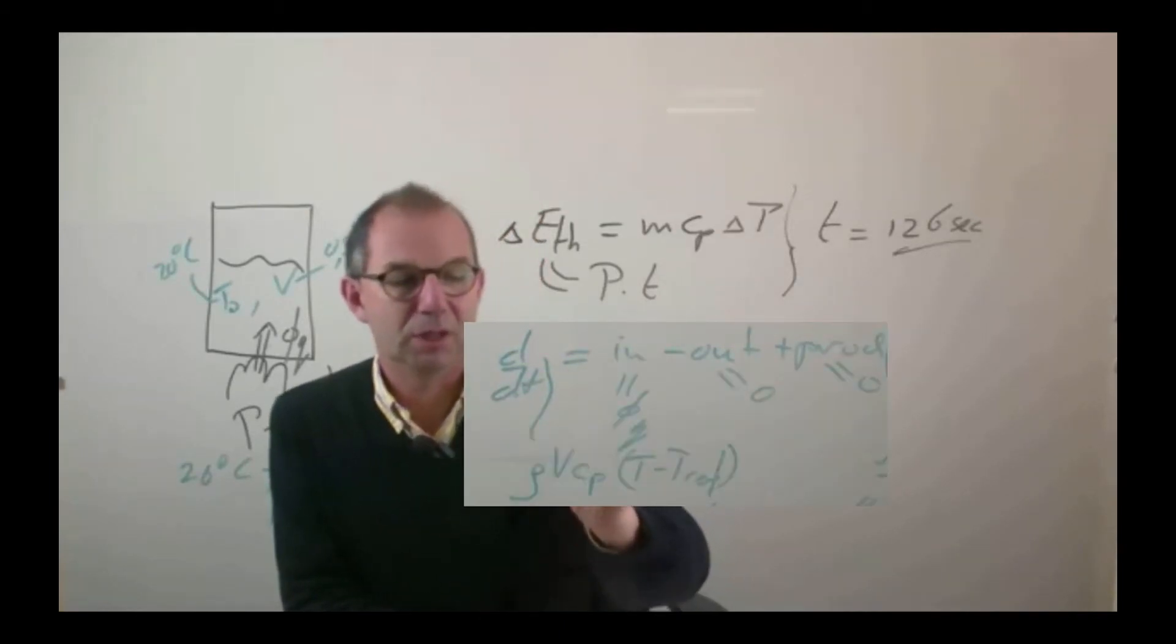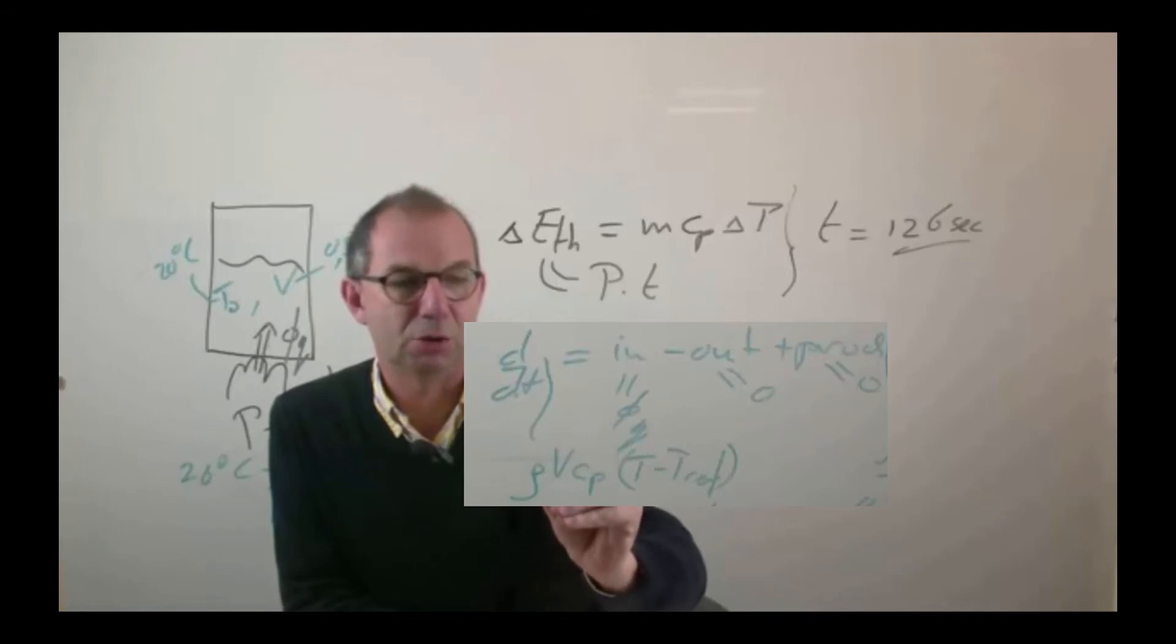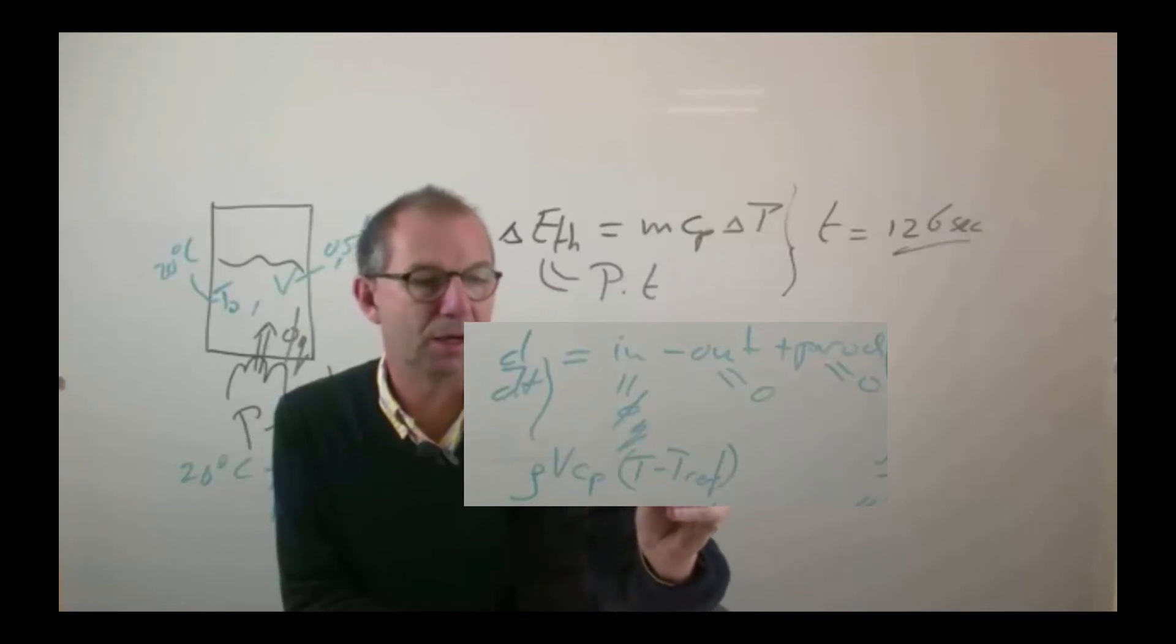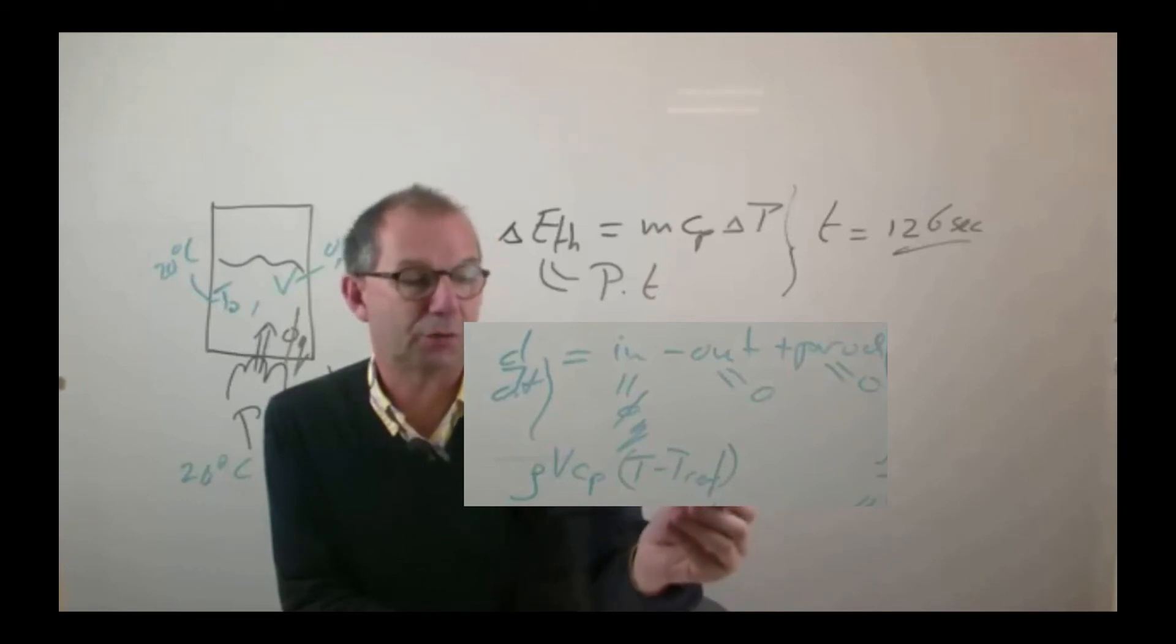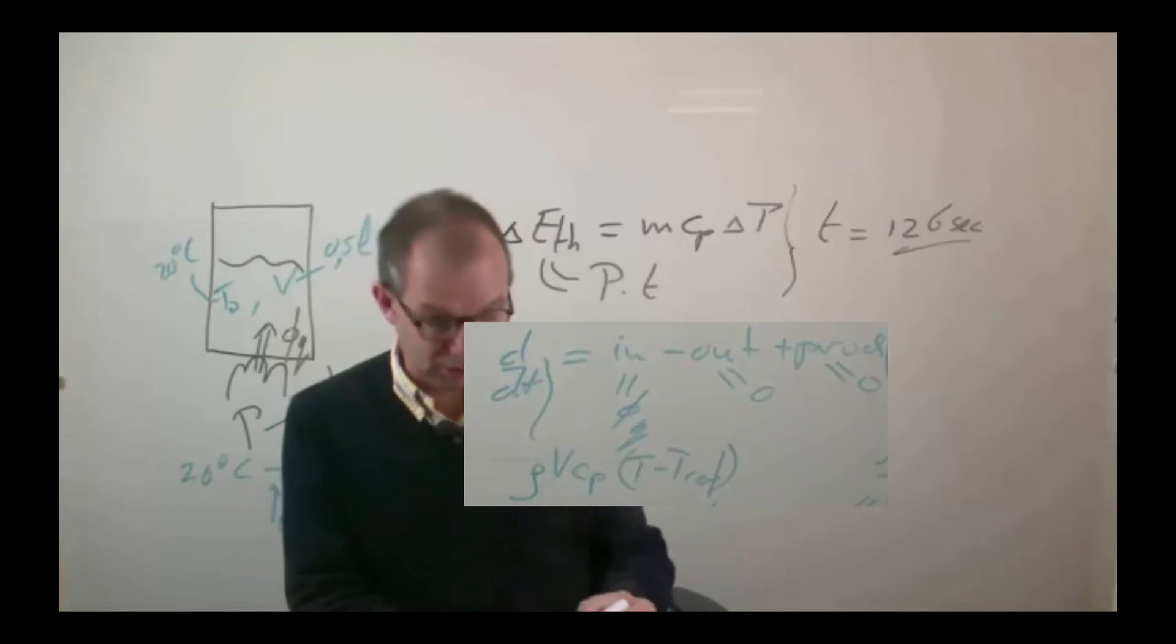And here we need to write the energy in terms of temperature, and that is rho V Cp T minus a reference temperature. Basically you say, I start from my 20 degrees, if I heat up, this is the amount of energy that I need to put in, just like what I wrote here but now in terms of density and volume.